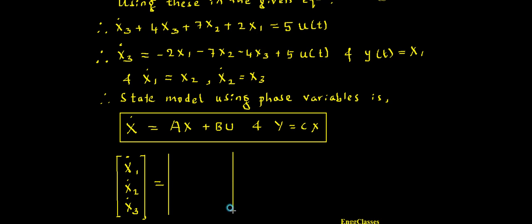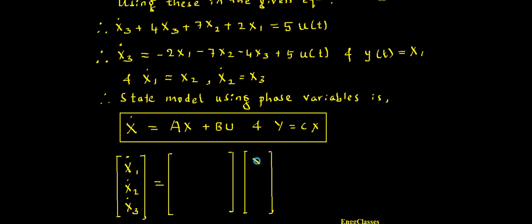The 3×3 matrix A gets multiplied with X, which is again a 3×1 matrix containing X1, X2, and X3. Now I need to fill in what A is. For that I look at the expressions. X1-dot equals X2.